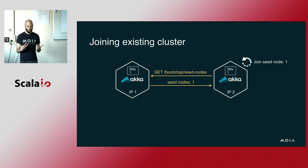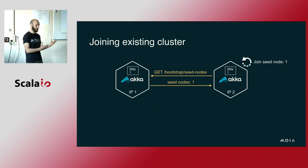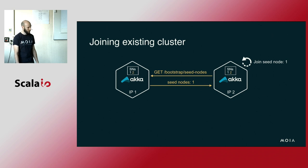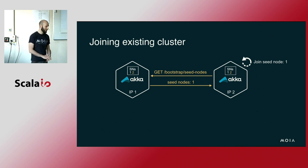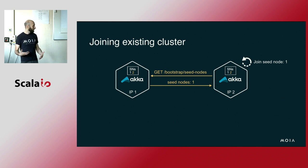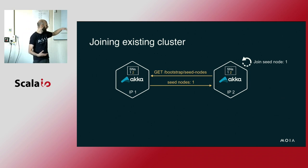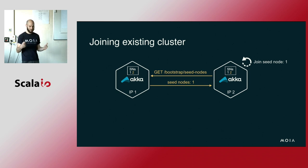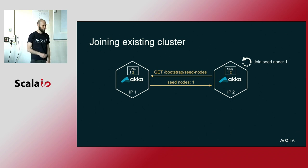So we've gone through bootstrapping for a completely new cluster and also how new members can join an existing cluster. This joining mechanism is called epidemic joining - once the right node is also part of the cluster, it will also write itself to the seed node registry, so that a third node could join either over IP2 or over IP1.